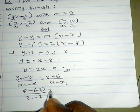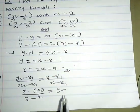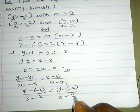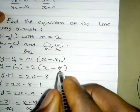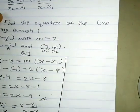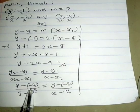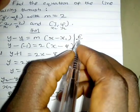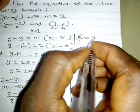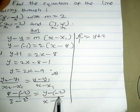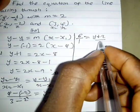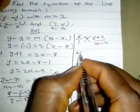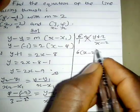So we have 6 over 1 equals (y plus 2) over (x minus 2). By cross multiplication we have 6 times (x minus 2) equals 1 times (y plus 2), which gives 6x minus 12 equals y plus 2.